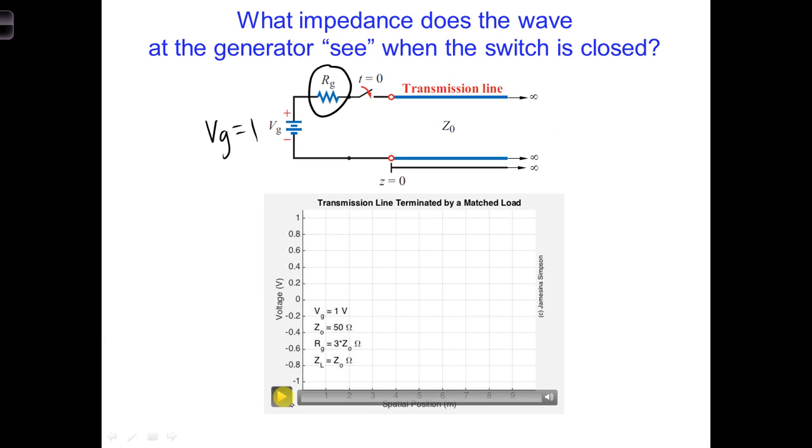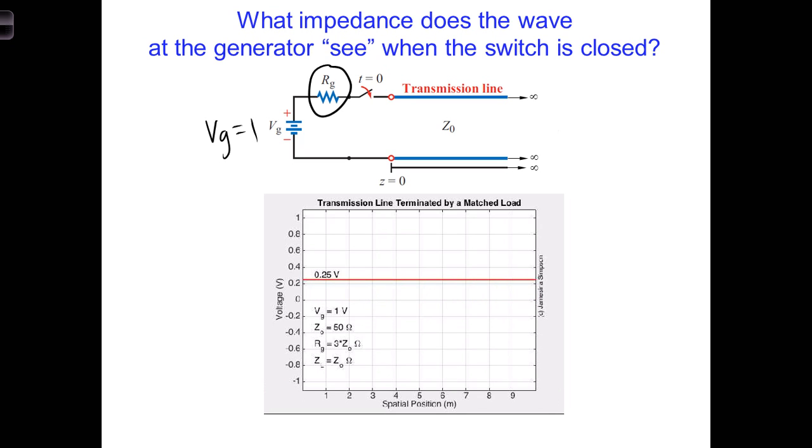In this scenario, Vg is equal to 1, but we see the initial pulse had an amplitude of 0.25 volts. Spend a minute thinking about how we get an amplitude of 0.25 volts.